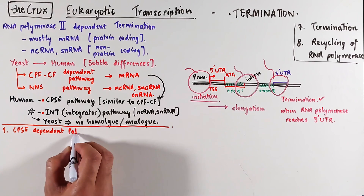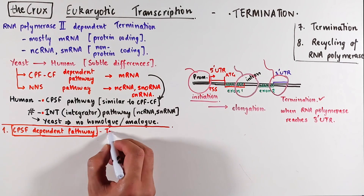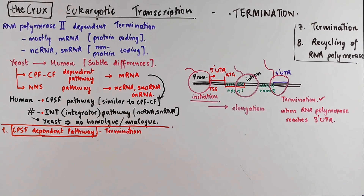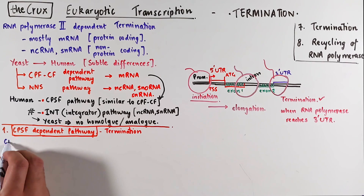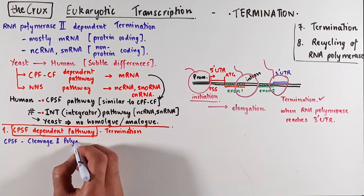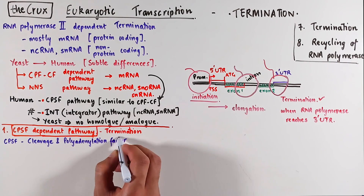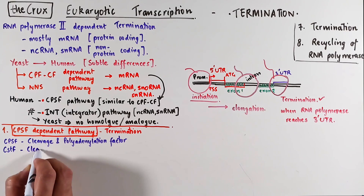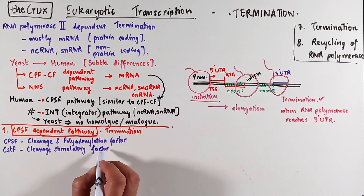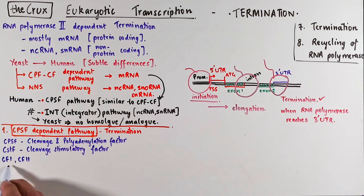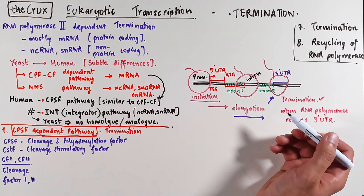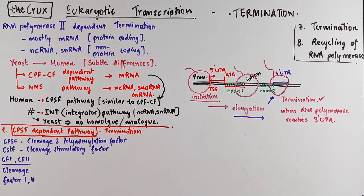Let's discuss the CPSF-dependent transcription termination first. This pathway has three specific proteins involved: the CPSF (cleavage and polyadenylation specificity factor), the CSTF (cleavage stimulatory factor), and a group of cleavage factors I and II. Termination occurs when the elongating polymerase reaches the 3' UTR of a gene, so there must be something important in the 3' UTR that signals the RNA polymerase to terminate transcription — and indeed, there is a signal.